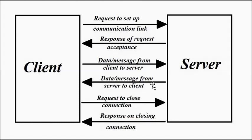The difference between the request-response and exclusive pair models lies in the setup and teardown steps: the request to set up the communication link, the acceptance of that, and the request to terminate the communication link with its acknowledgment. These steps are not present in the request-response model because that model is stateless and independent. Here it is dependent — only when the previous connection is terminated can a new connection link be set up. Please watch the previous communication model videos on request-response, publish-subscribe, and push-pull for better understanding.